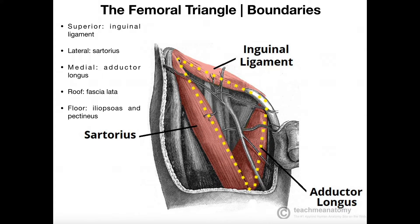The lateral border is the sartorius muscle. In other videos on the muscles, I'll refer to the sartorius as the 'seat belt muscle' because as it descends downward from the anterior superior iliac spine, it moves medially toward the medial aspect of the knee, crossing over some of these muscles like a seat belt. S for sartorius, S for seat belt.